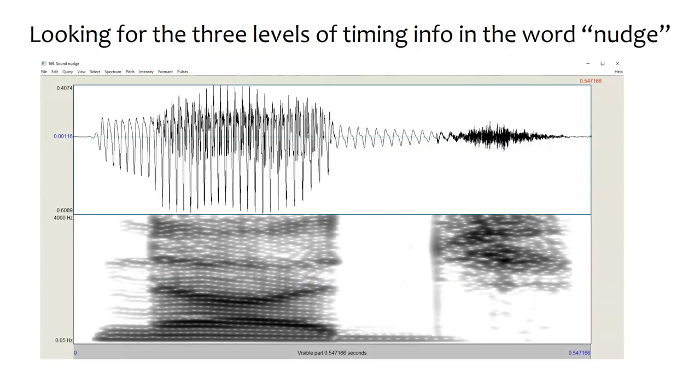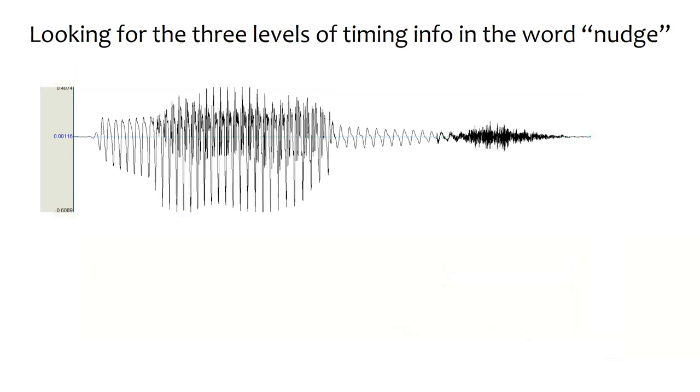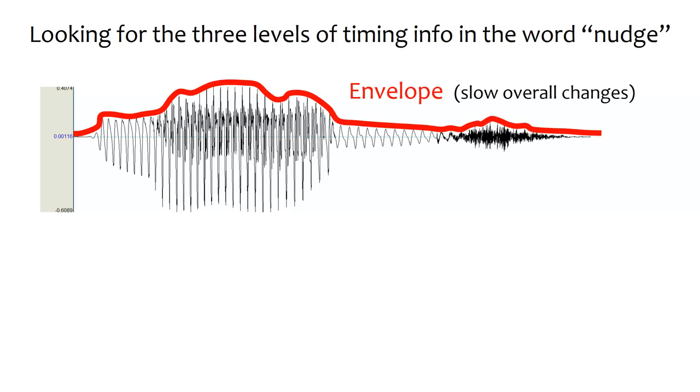Let's start with this word nudge and look for the three levels of information. The first thing we can do is just get rid of the spectrogram, because what we're talking about is timing information, which is really based on the waveform. Highlighted in red is the envelope, which just shows us the slow outline of the overall changes in intensity over the signal. So we can just ignore all the detail underneath this and just track the peaks in the waveform as they change across time.